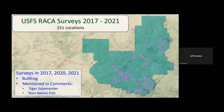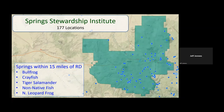The last Kaibab dataset was a large set of bullfrog surveys from 2017, 2020, and 2021, well distributed throughout the Ranger District. Surveyors also noted tiger salamanders and non-native fish. Finally, the Spring Stewardship Institute supplied survey data for all springs within 15 miles of the Williams Ranger District. Their surveys included observations of bullfrog, crayfish, tiger salamanders, non-native fish, and northern leopard frogs, as well as general surveys of all vertebrates, invertebrates, and flora species observed at each spring.